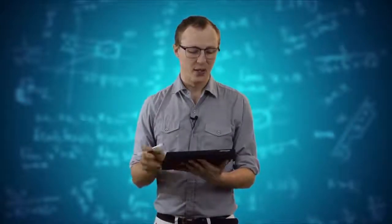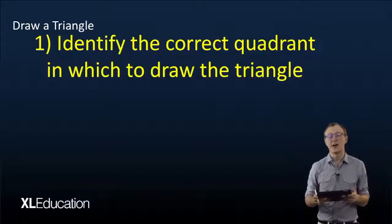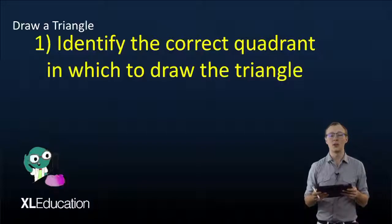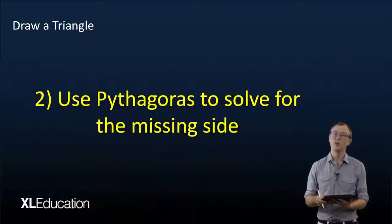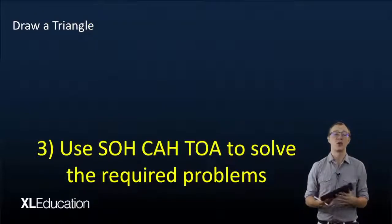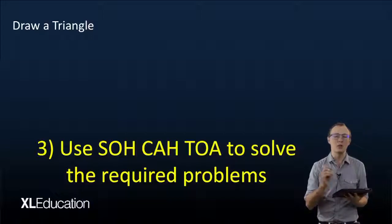When drawing a triangle, your first step is to identify which quadrant you are in. If you don't identify the correct quadrant, you aren't going to have the right positives or negatives. Then use Pythagoras's theorem to solve for the missing side, and after that use SOHCAHTOA in order to simply read the answer off your triangle.